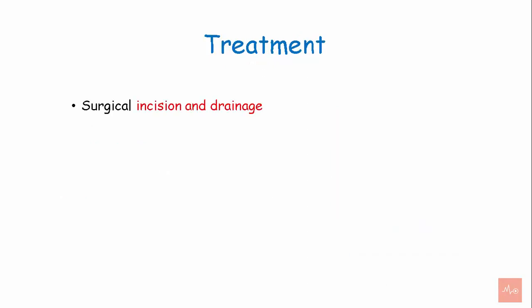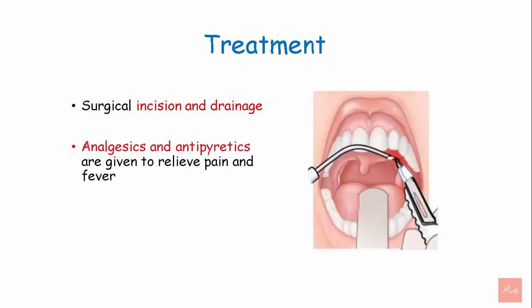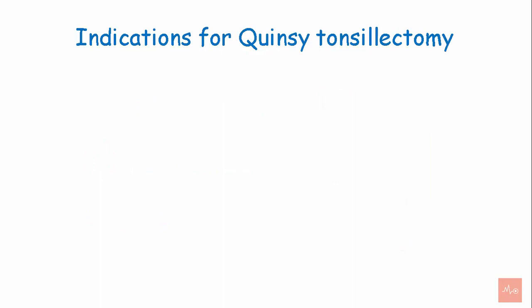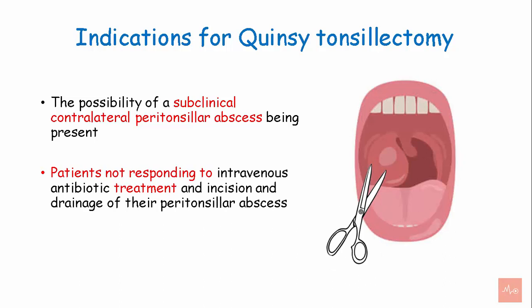Treatment. Surgical incision and drainage is the main treatment. Analgesics and antipyretics are given to relieve pain and fever. Quincy tonsillectomy is also indicated. Indications for Quincy tonsillectomy include the possibility of a subclinical contralateral peritonsillar abscess, and patients not responding to intravenous antibiotic treatment and incision and drainage procedure.